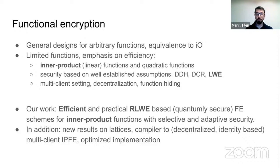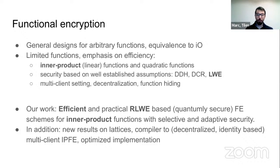Our work continues this line of research. We provide the Ring-LWE-based functional encryption for inner products — actually two schemes: one with selective security and one with adaptive security. We also provide new results on ideal lattices. The main goal of basing our scheme on the Ring-LWE assumption is to construct something practical. We also provide an optimized, publicly available implementation to test the scheme, and we also compile it to decentralized identity-based multi-client settings with multiple encryptors.